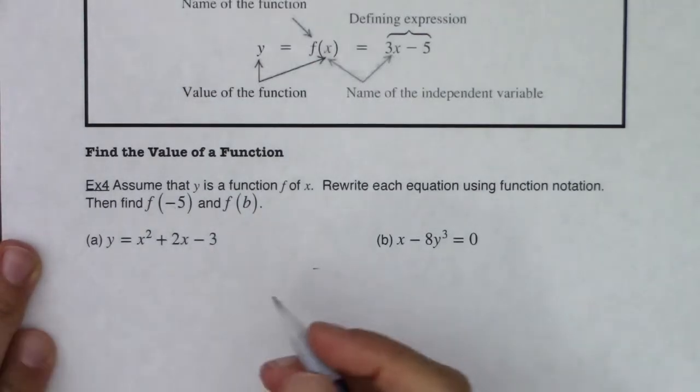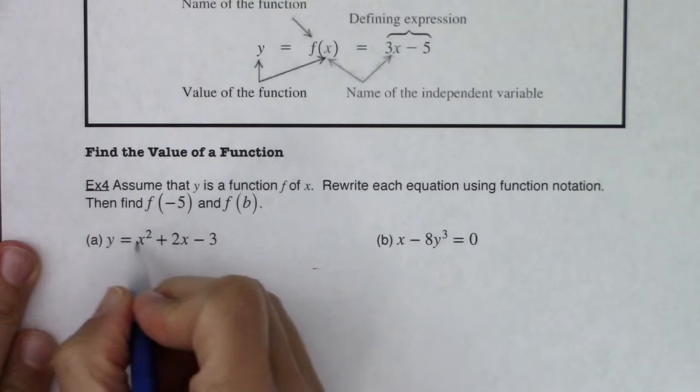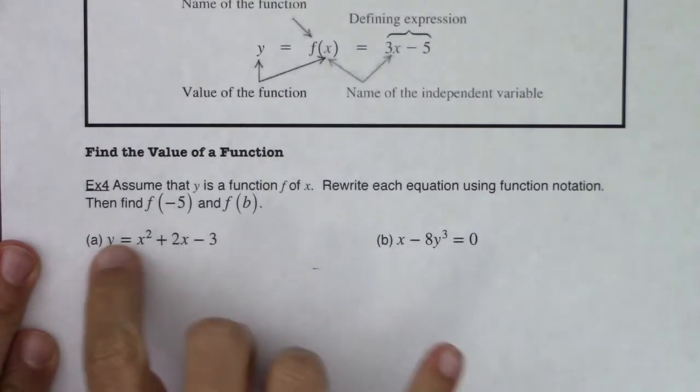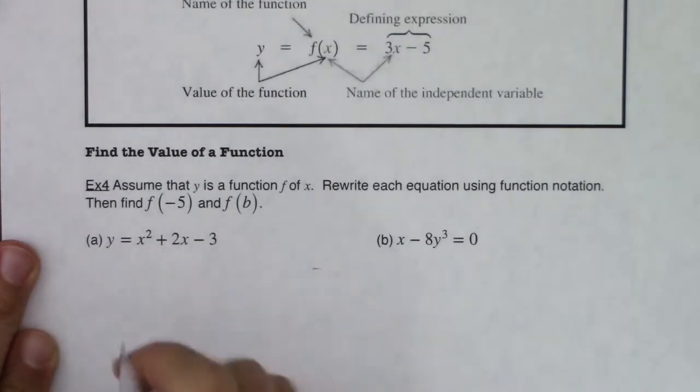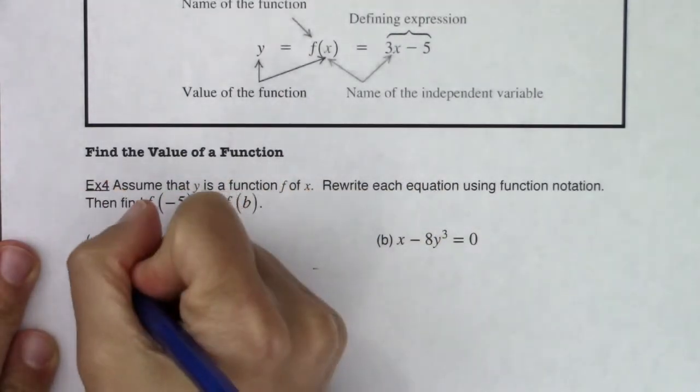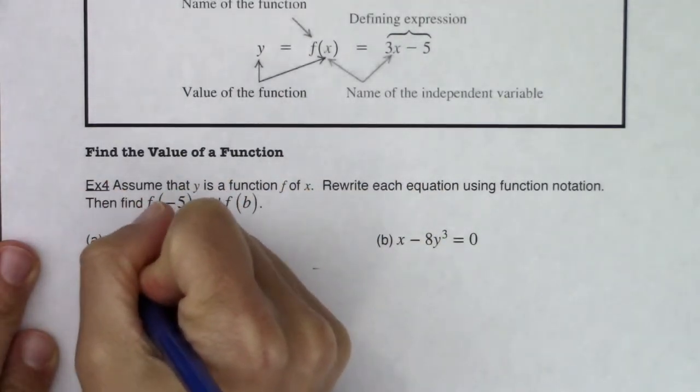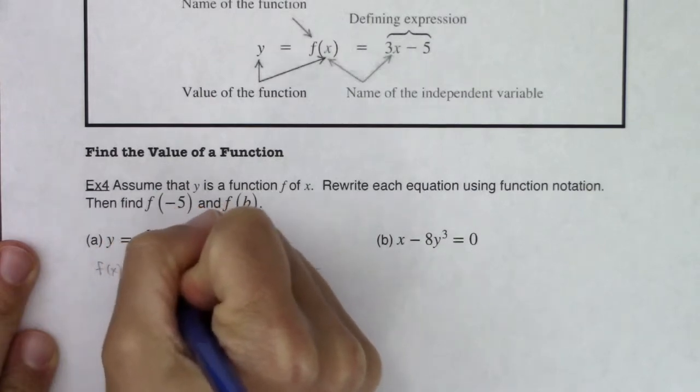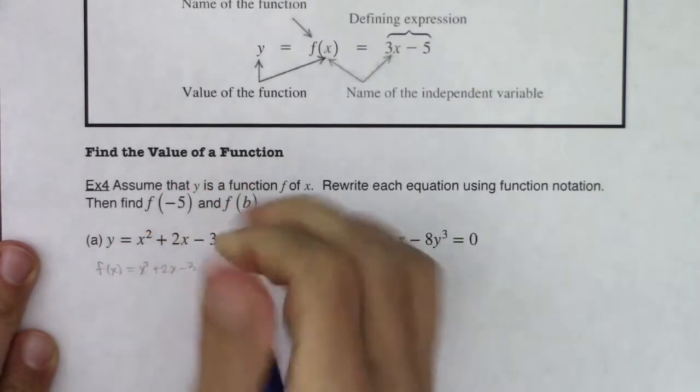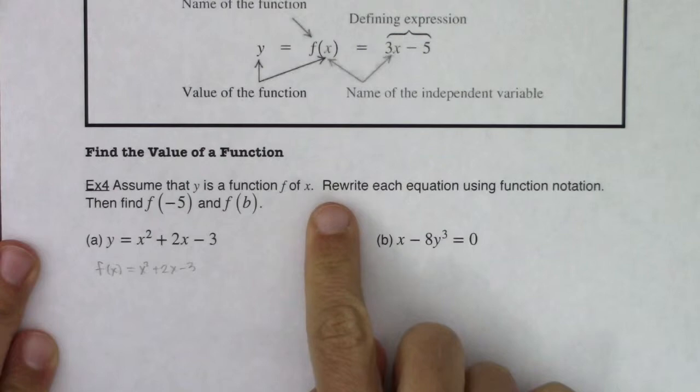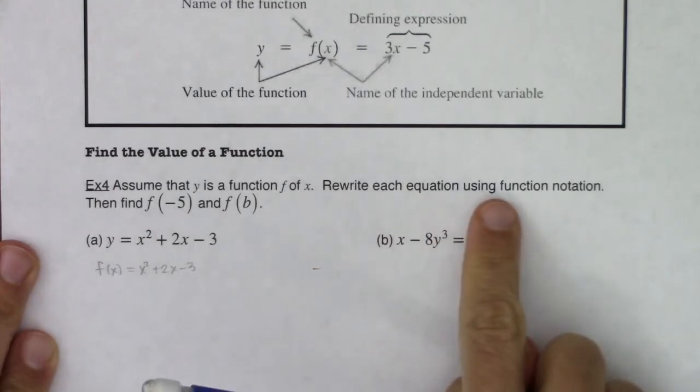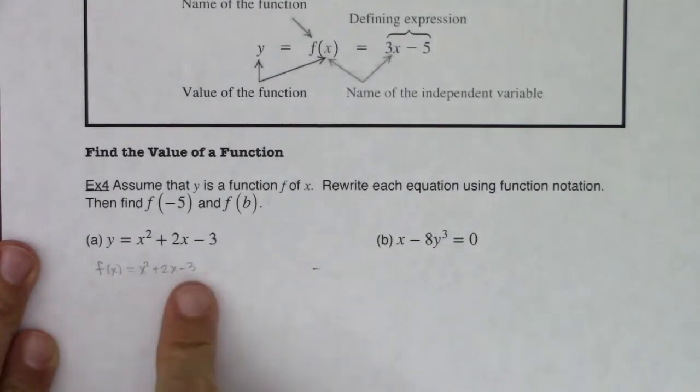This says assume that y is a function of x. Rewrite each equation using function notation and then we're going to find f of negative 5 and f of b. I see y and I see my function of x, y is defined in terms of x, y depends on x, but I'm going to replace that y with the symbol f of x. The first direction says rewrite each equation using function notation. So there I did it, I used function notation.